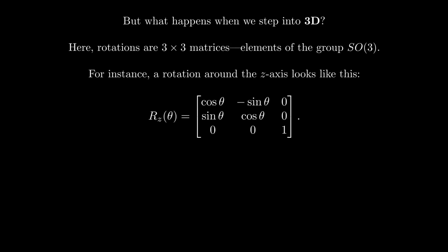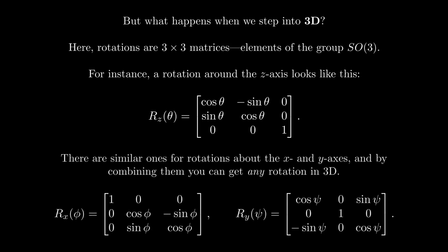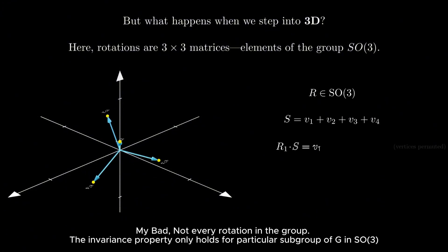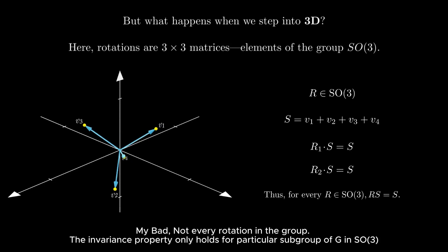What happens when we step into 3D? Here there are 3×3 matrices, part of a bigger group called SO(3). For instance, our rotation around the z-axis looks like this. There are similar ones for rotations about the x and y axes, and by combining them we can get any possible rotation in three dimensions. Now here's the key idea: if you place points at the corners of a perfectly symmetric object, like a tetrahedron, every rotation in this group just permutes the points. The sum of those vectors doesn't change. And the only vector that can stay the same under all possible rotations is the zero vector. So once again, the sum must vanish.